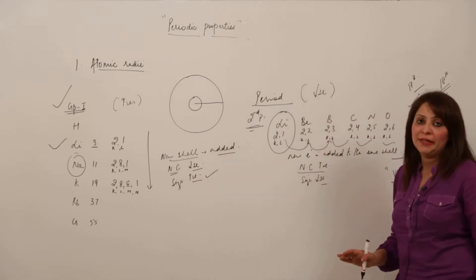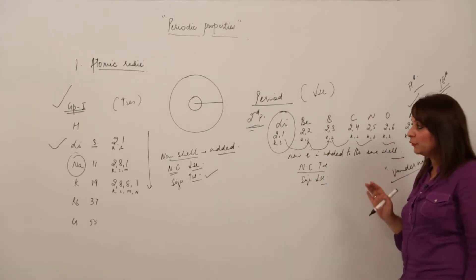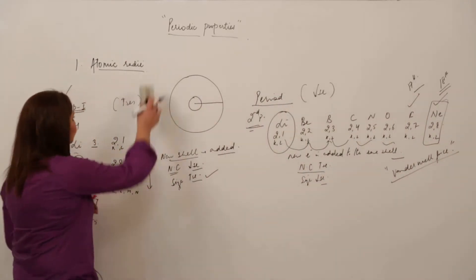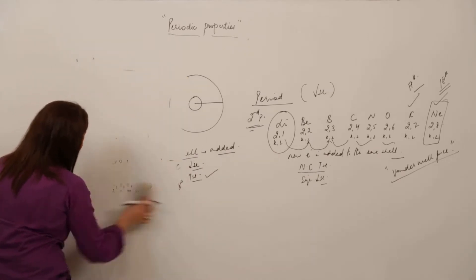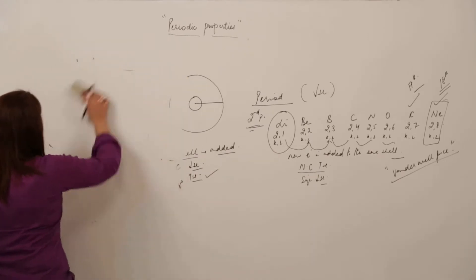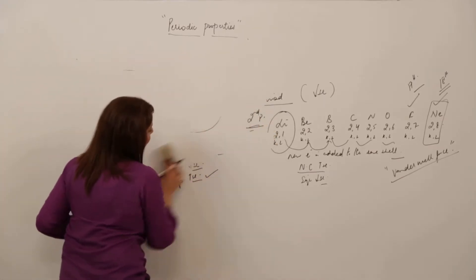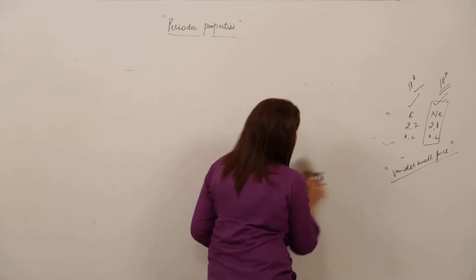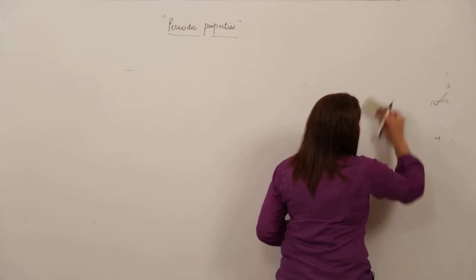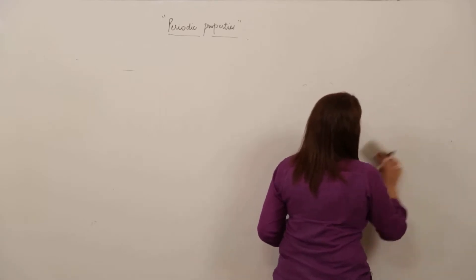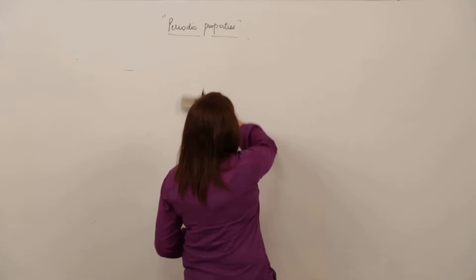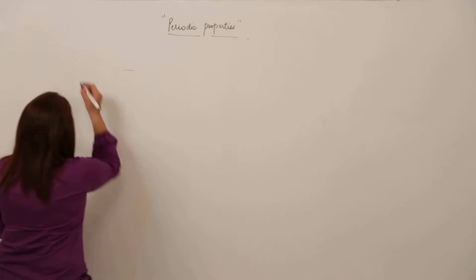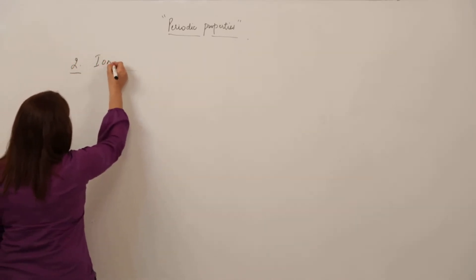This is how you explain the first property — atomic radii. Now we are taking into consideration the second property: ionization energy, which can also be called ionization enthalpy. Enthalpy and energy are used interchangeably at this level; you will learn the difference in higher class.